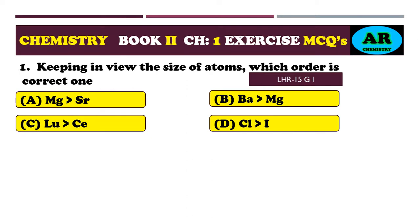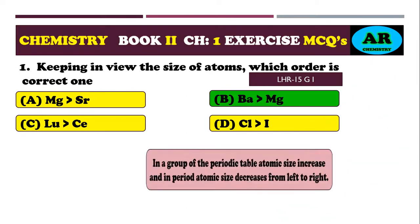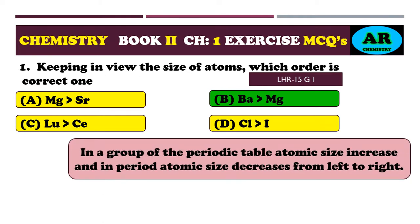The correct option here will be beta. In the periodic table, atomic size increases down the group. Along the period from left to right, the atomic size of the element decreases.